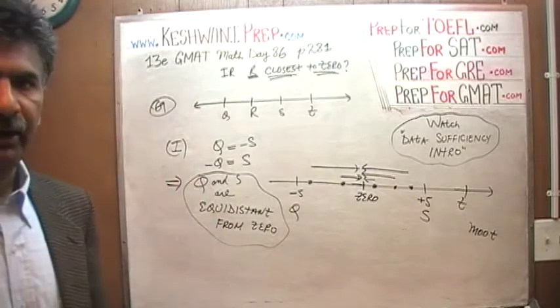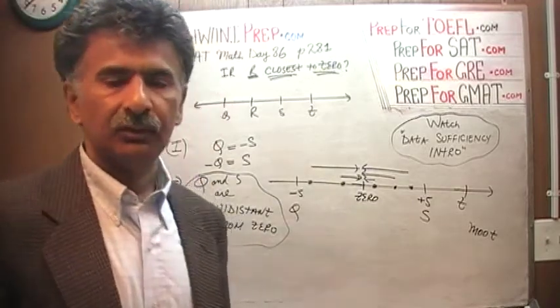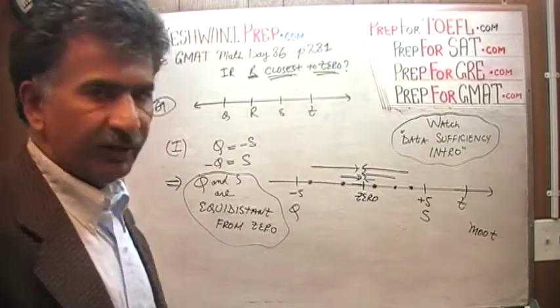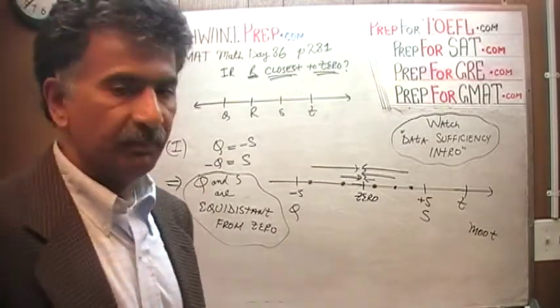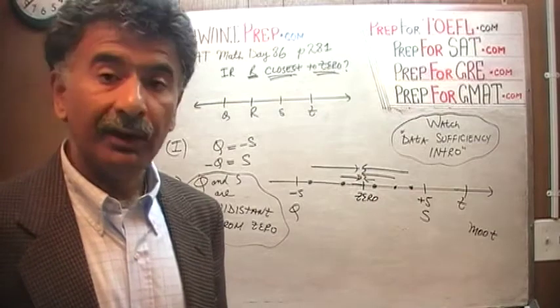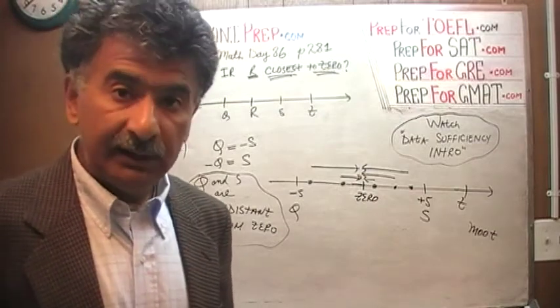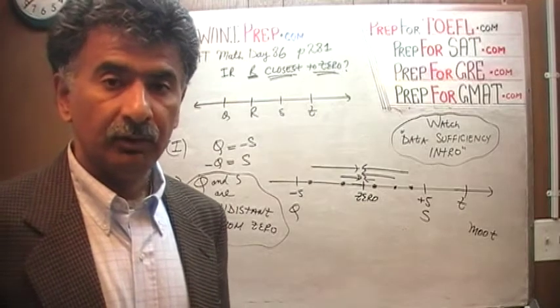That's how we speak. Q and S are equidistant from zero. In other words, the distance from zero to Q, and zero to S, it's the same, which is why zero is in the middle. And R is somewhere in between. Therefore, R is going to be the one that is going to be closest to zero.